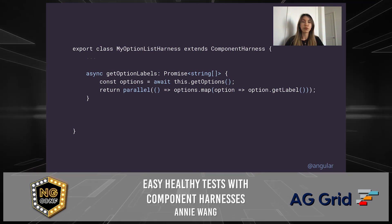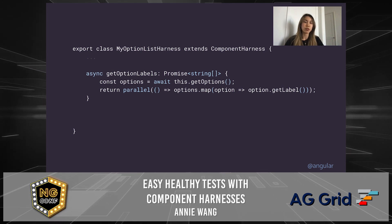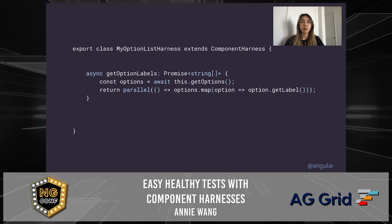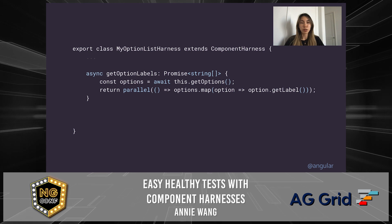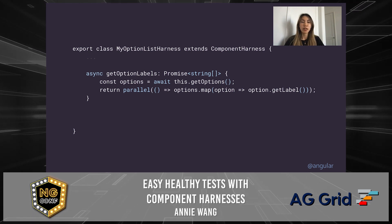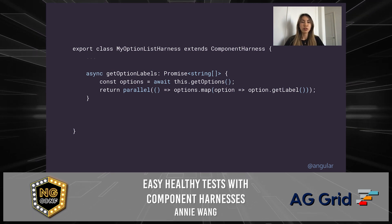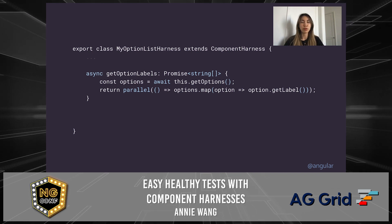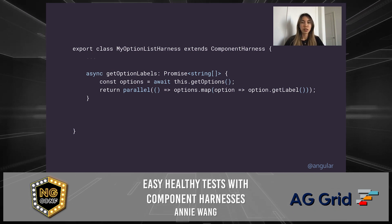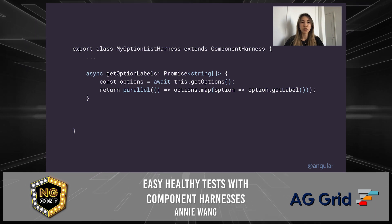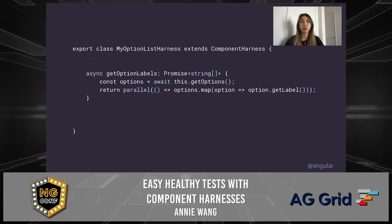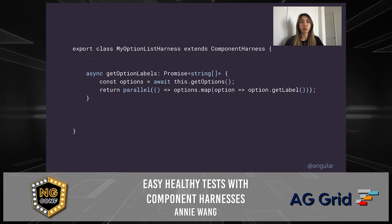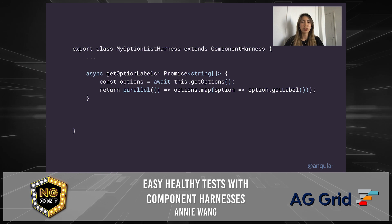Another cool feature of component harnesses is that we can get attributes of multiple harnesses at the same time using parallel, instead of awaiting each one in series. Let's say you want to get the labels of each option — you would call the getOptions method and then use parallel to call option.getLabel on each option. This consolidates change detection so it runs once before and once after the block of code in the parallel callback, making your tests a lot more efficient and clean.